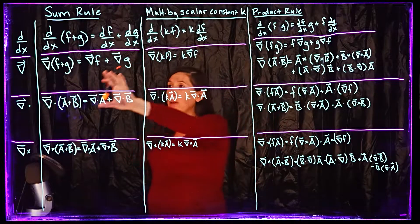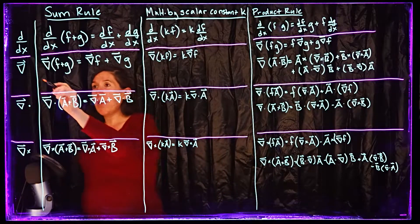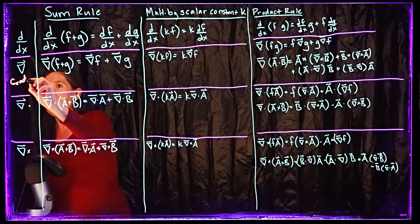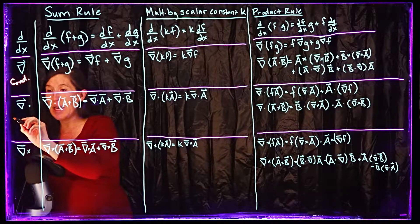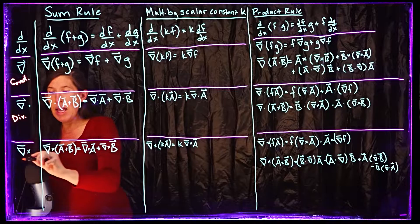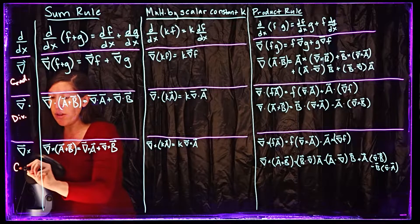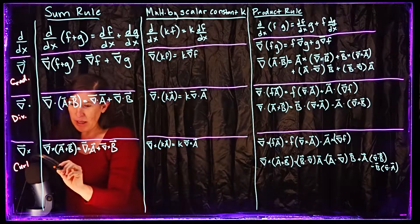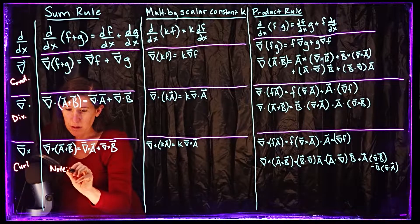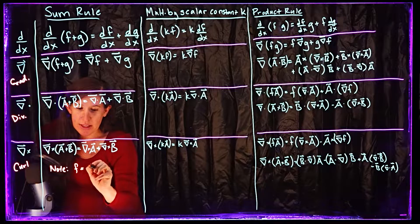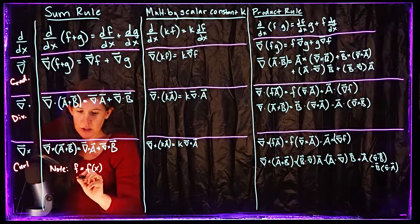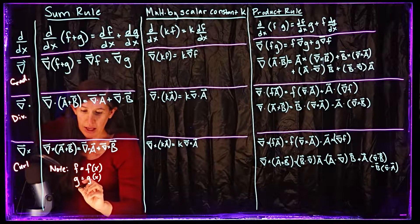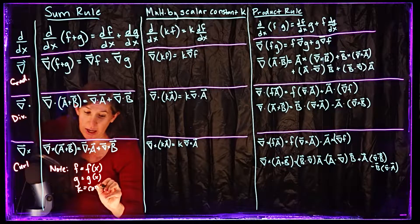Alright, so those should be standard for you. Down here we have some similar properties, but now on the left here, this is of course the gradient. This is the operation for taking the divergence. And down here we have the operation for taking the curl.